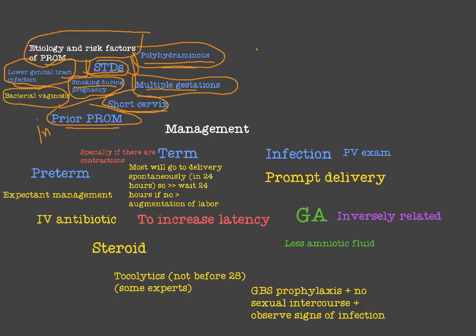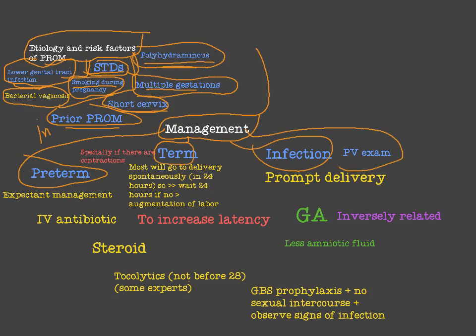Now let's move to the management of pre-labor rupture of membrane. I've divided management into four categories to make things easier: preterm, term, infection, and PV examination. If you have any genital tract or intra-uterine infection, or if a digital PV examination has been done, you have to deliver the baby promptly. Immediate delivery is required in these two cases.